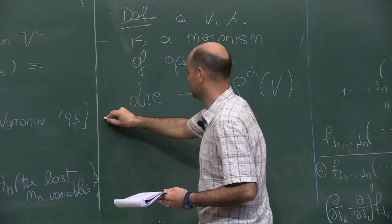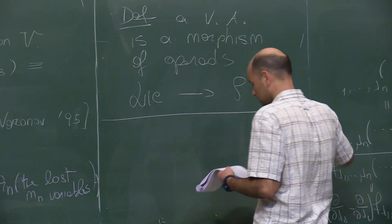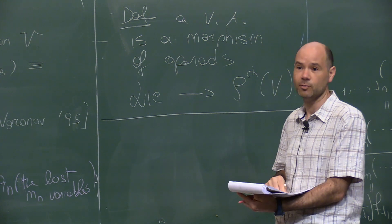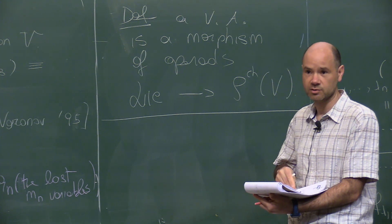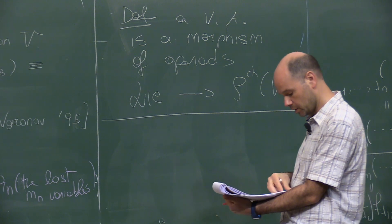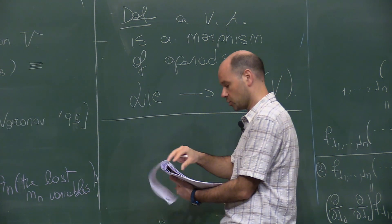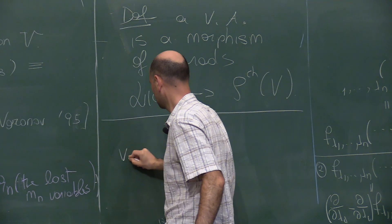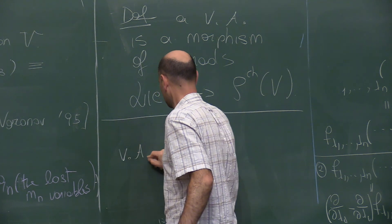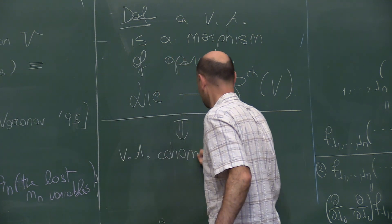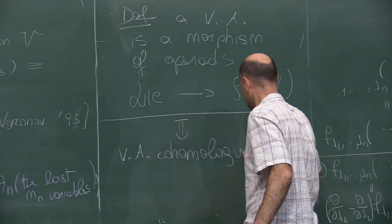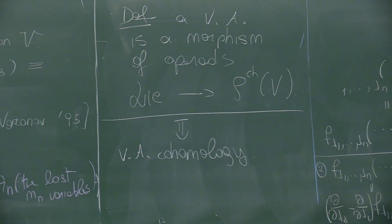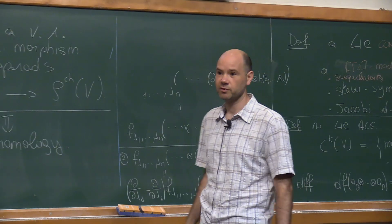I noticed that it's strange that we're at a conference on vertex algebras and so far nobody gave the definition of a vertex algebra. So let me give the definition. Definition: a vertex algebra is a morphism of operads from the operad Lie to the operad P_chiral(V). The good thing about this definition is that it comes for free with the cohomology theory associated to it, giving us vertex algebra cohomology.